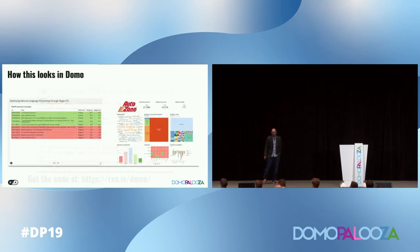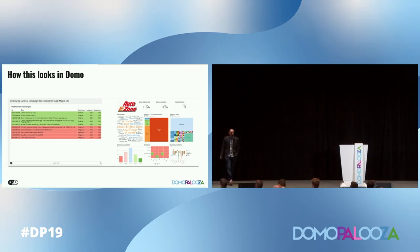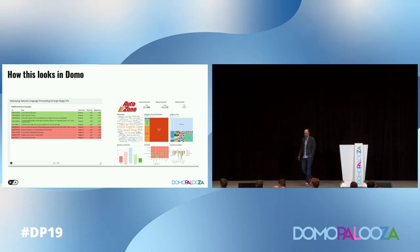Looking at how this looks in Domo, we create different dashboards showing things like how many comments there are, what the sentiment is across different categories, and how that's changing over time. On the left-hand side we can see the sentiment coming out — things like 'great customer service' popping out as positive, which we would expect, and then some other things that are clearly negative terms.